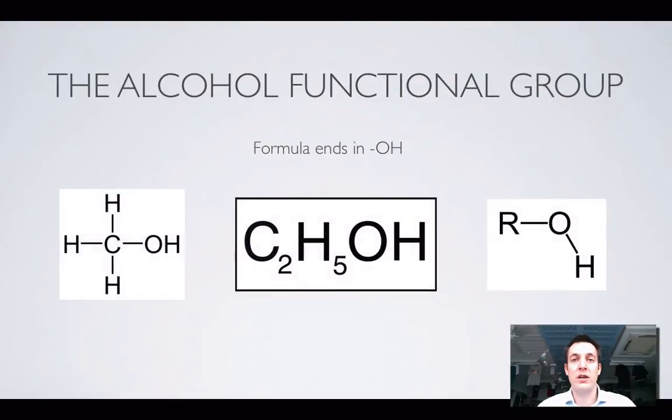Let's start by looking at what the functional group we call an alcohol looks like. The formula of an alcohol will always end in OH, because any alcohol will have an oxygen attached to a carbon and a hydrogen. Anytime you've got this OH group in a molecule, you have an alcohol, and your formula will end in OH.